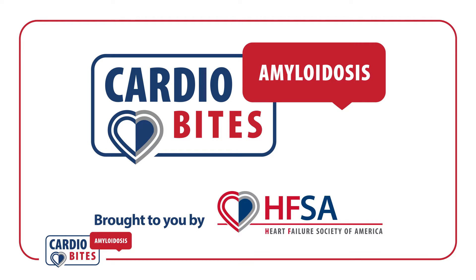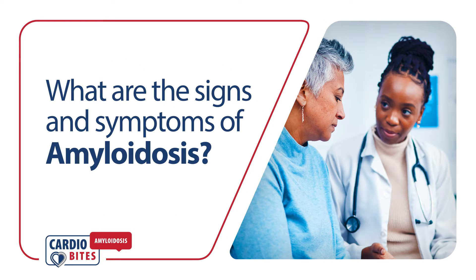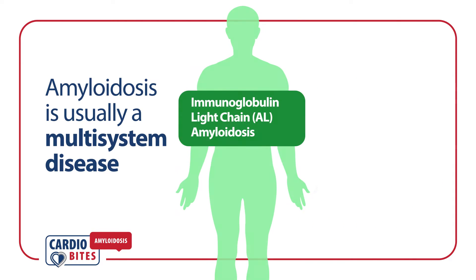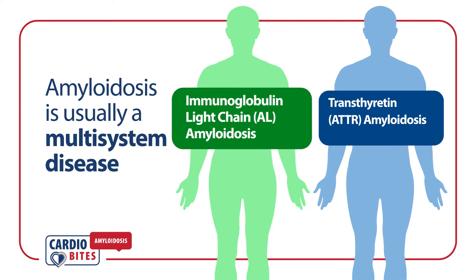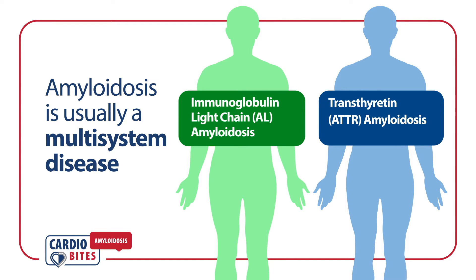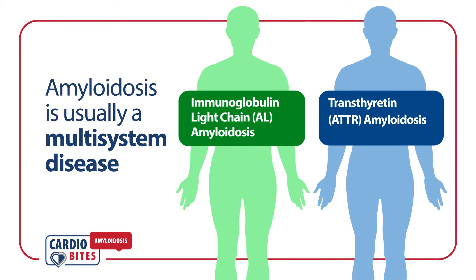Cardiobytes. What are the signs and symptoms of amyloidosis? Because amyloidosis is usually a multi-system disease, there is a wide spectrum of clinical presentations. We will review the most common signs and symptoms of immunoglobulin light chain, or AL amyloidosis, compared to transthyretin, or ATTR amyloidosis.